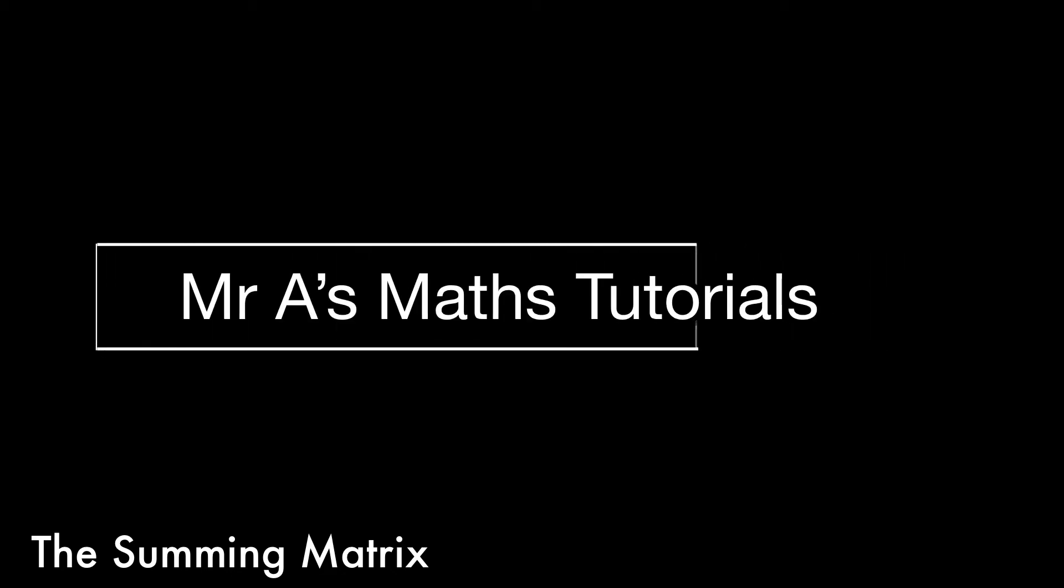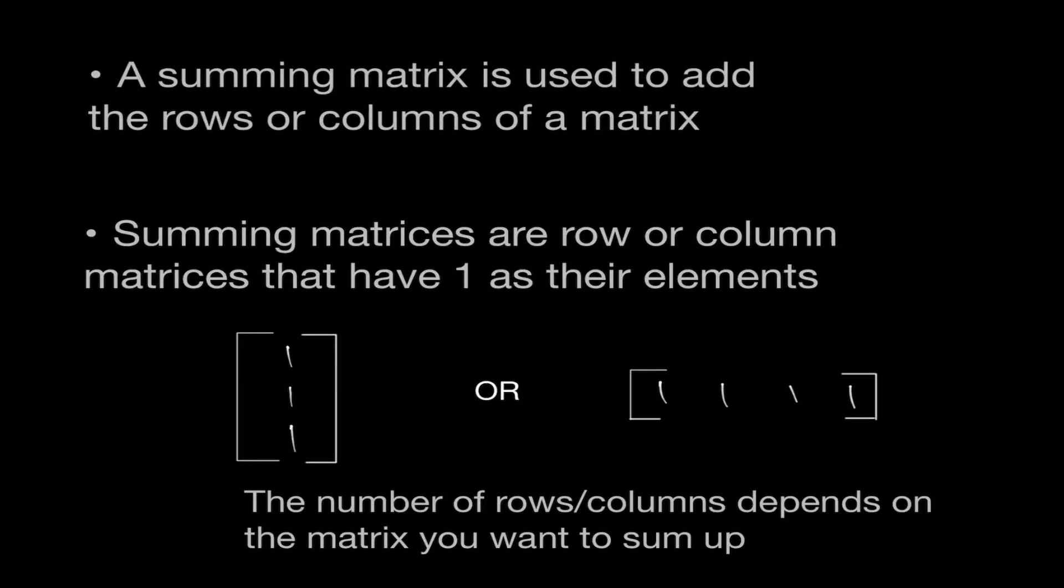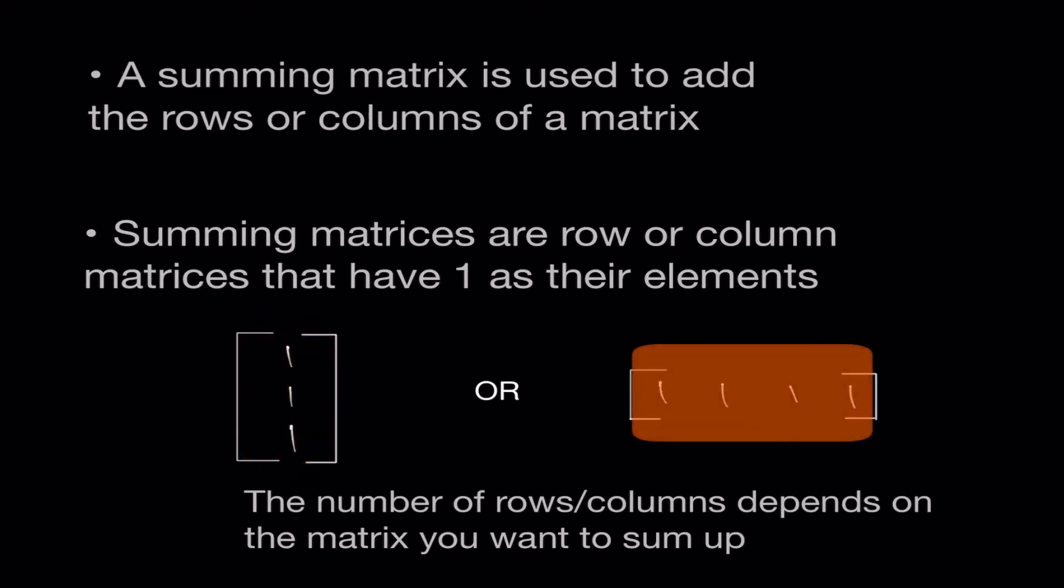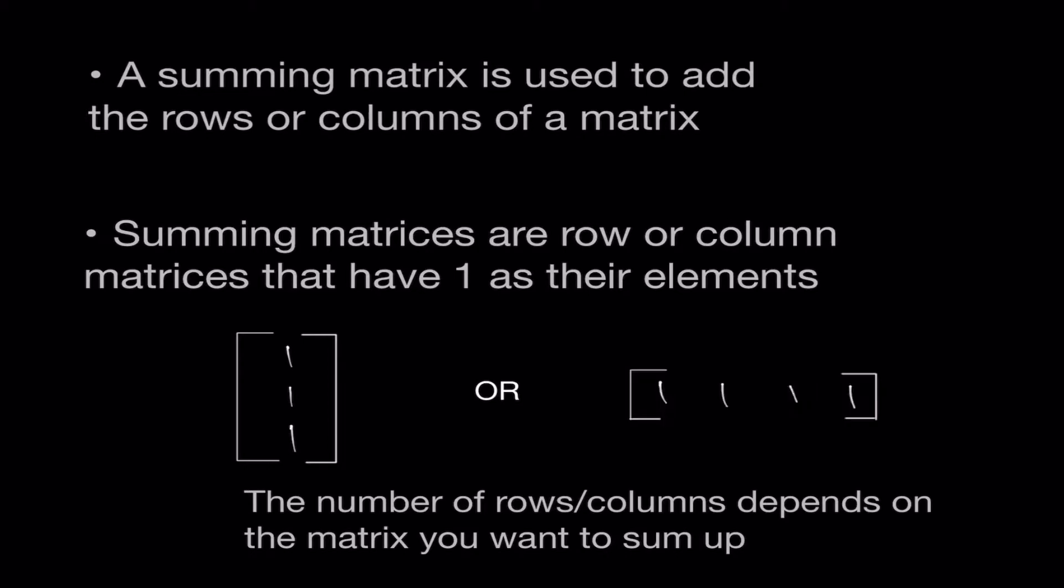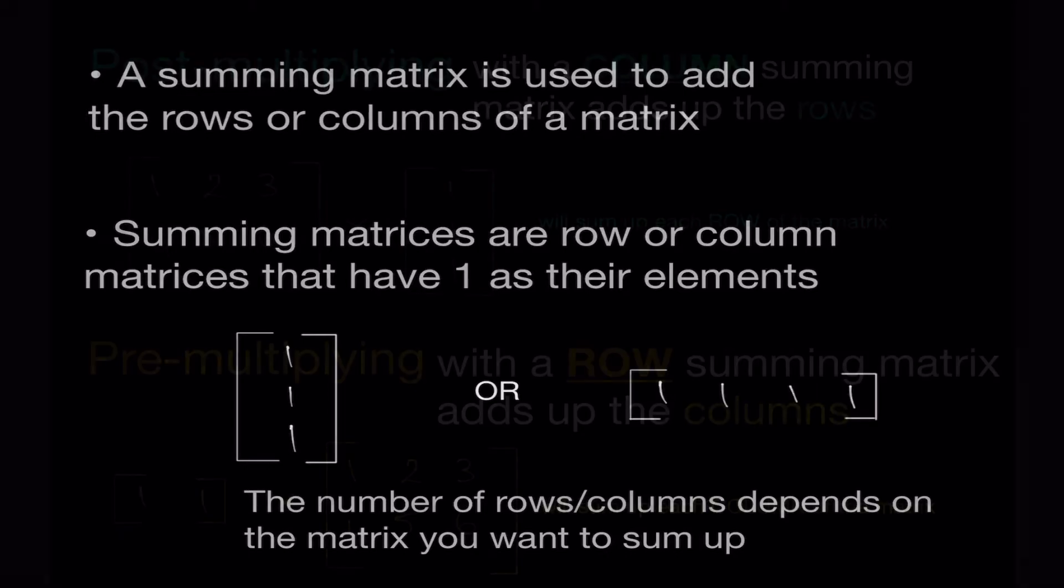In this video we're going to look at how to use summing matrices and what they're used for. A summing matrix is a special type of matrix that's used to add the rows or columns of a matrix. They only consist of 1 as the elements, and the number of rows or columns in these summing matrices depends on the number of rows or columns in the matrix you're trying to sum up.